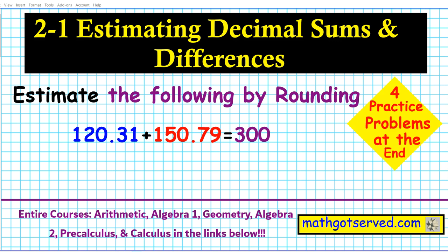Good day students. Welcome to mathgotserved.com. In this clip we're going to be going over section 2.1 on our series on operations and decimals. We're going to be looking at how to estimate the sum and difference of decimals. The sample problem is 120.31 plus 150.79, and the sum by estimation is 300. Don't forget there are four practice problems at the end of this presentation for you to try out in order to demonstrate mastery of the contents of this tutorial.